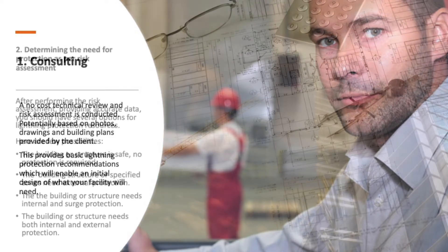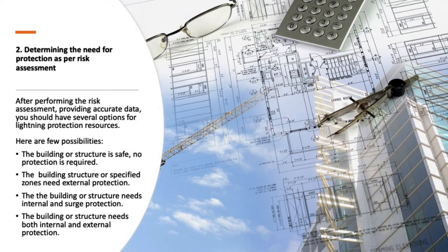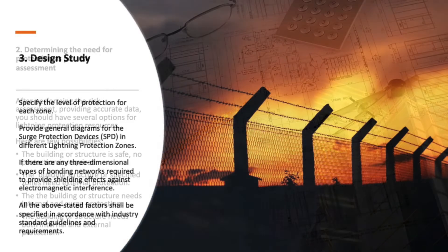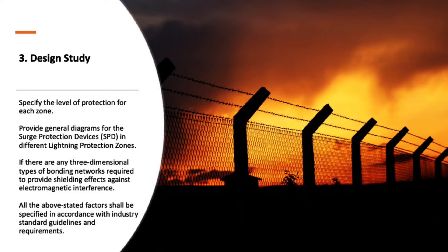Step two: determining the need for protection. After performing the risk assessment and providing accurate data, you should have several options for lightning protection. Here are a few possibilities: the building or structure is safe and no protection is required; the building, structure, or specified zones need external protection; the building or structure needs internal and surge protection; or the building or structure needs both internal and external protection.